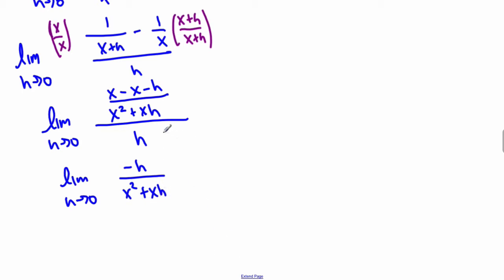I'm going to rewrite this as multiply by 1 over h, so then I have 1 over h right here. That will cancel.